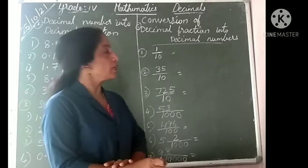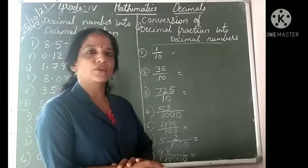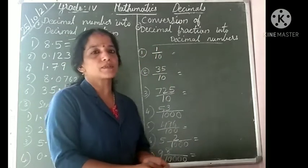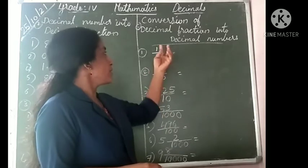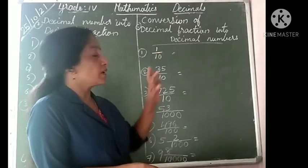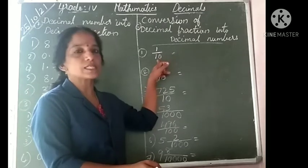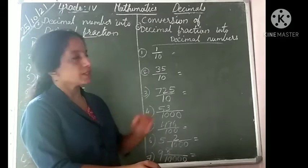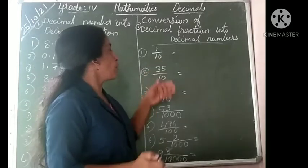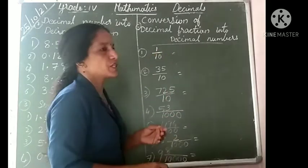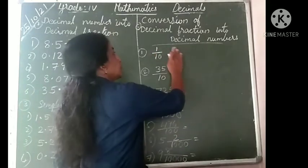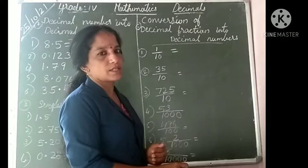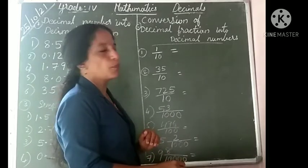First: decimal fraction into decimal number. There is a slight difference between decimal fraction and decimal numbers. What is a decimal fraction? It has a numerator and denominator, but one condition — the denominator is always in the form of 10, 100, 1000, 10000, etc. That is a decimal fraction. A decimal number, on the other hand, has a decimal point.